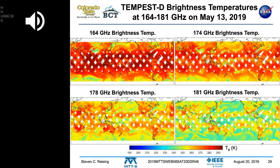We found we got not only hurricanes and typhoons and individual storms, but global data. We got that at 164, 174, 178, and 181 GHz. You see different brightness temperatures because we're looking at different levels in the atmosphere, looking at different amounts of water vapor.